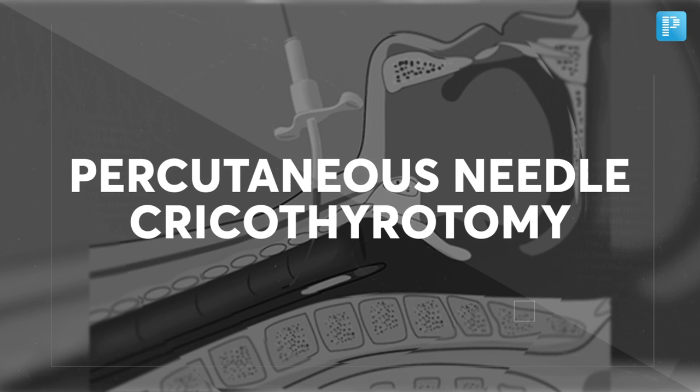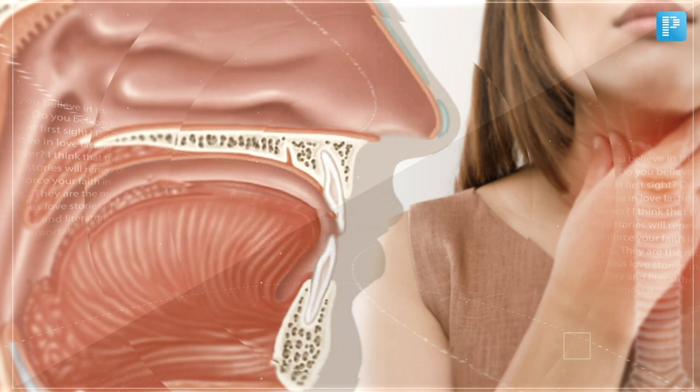This is an emergency procedure performed whenever there is an upper airway obstruction. When a patient is not able to breathe and you cannot intubate, you need emergency access to the airway — this is achieved with needle cricothyrotomy.